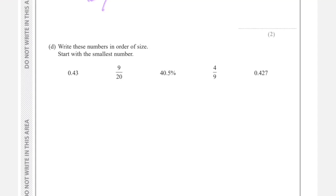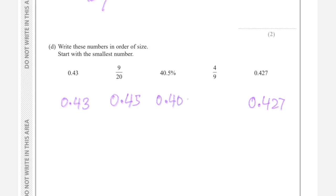Write these numbers in order of size starting with the smallest: 0.43, 0.427, 9/20, 40.5%, and 4/9. Since they are in different forms, convert them all to decimals. We already have 0.43 and 0.427. For 9/20: 9 ÷ 20 = 0.45. For 40.5%: that's 40.5 over 100, so moving the decimal two places gives 0.405.